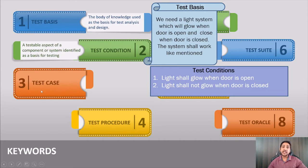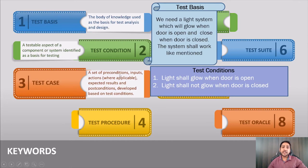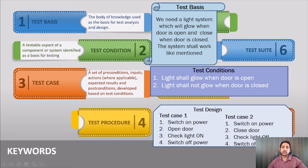Once we have the test condition, the next step is test cases — a set of preconditions, inputs, actions, expected results, and post conditions developed based on test conditions. By looking at the test condition, we write the test cases. For example: test case one — switch on power, open the door, check that the light is on, switch off power. Test case two — switch on power, close the door, check that the lights are off, switch off power. These two test cases are derived from the test conditions, which are derived from the test basis.